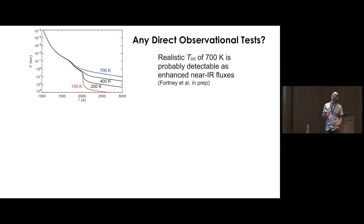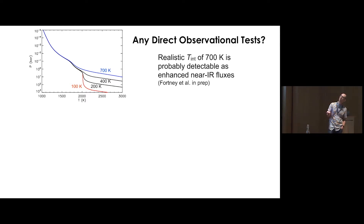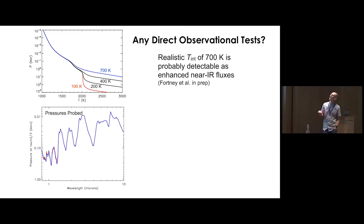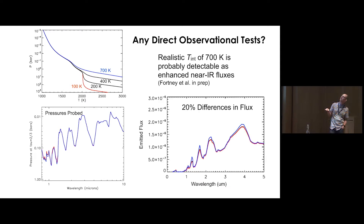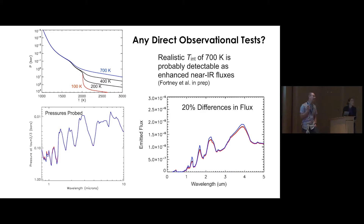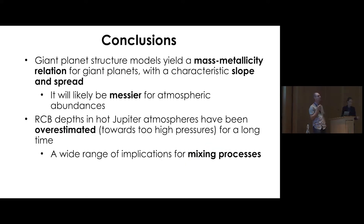For direct observational tests, we compute models with different interior temperatures — 700 K, 400 K, 200 K, 100 K — and calculate the pressure we probe as a function of wavelength. It's typically around a tenth of a bar but varies strongly with wavelength. In the JHK windows where opacity is minimum, we see the deepest levels and might detect enhanced fluxes in the near-infrared for a hot interior like 700 K compared to a cool one. I expect a mass-metallicity relation for giant planets to be messier in atmospheric abundances than in planetary structure.